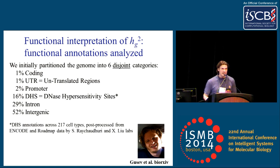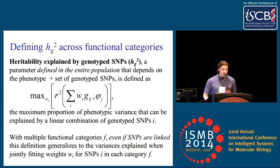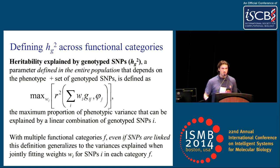These categories are not naturally disjoint; we force them to be disjoint by assigning SNPs to the first category on the list. For example, a SNP that's both promoter and DHS would be assigned to promoter under this scheme. We define heritability explained by genotype SNPs as the maximum R-squared to phenotype that you can obtain with any linear combination of genotyped SNPs. This definition naturally generalizes to multiple functional categories: performing a joint fit on all weights, you can ask how much of the variance is explained by the sum from each respective functional category.